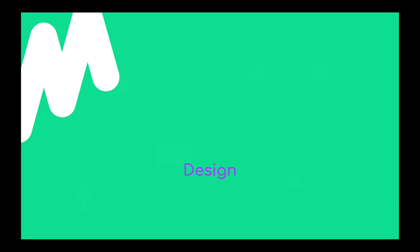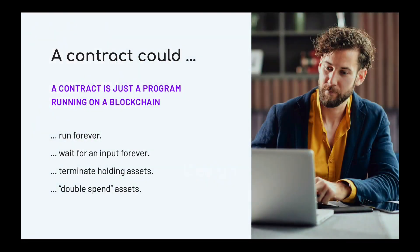When designing a language of contracts, we're really designing a programming language. A contract is just a smart contract, a program running on a blockchain. A contract in principle could run forever, get stuck waiting for an input forever, terminate while holding onto assets and locking them up, or potentially double spend. There are a whole lot of security issues a contract might have. So what we chose to do was design for safety.